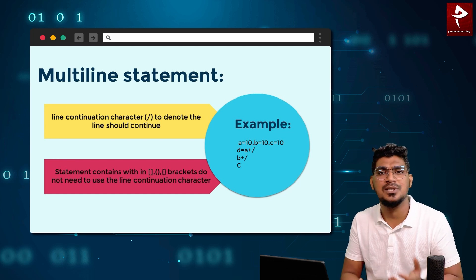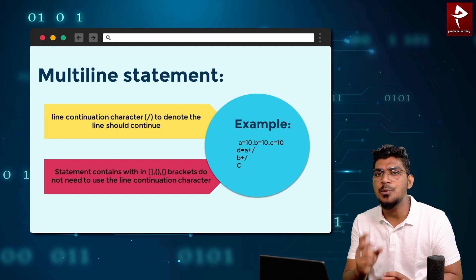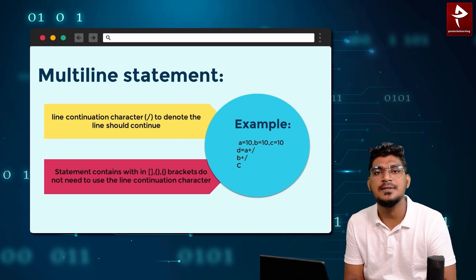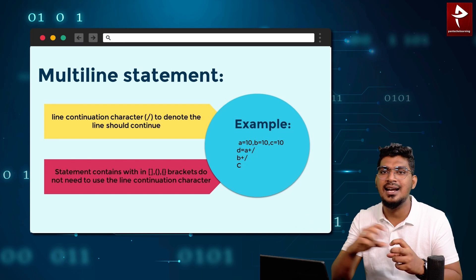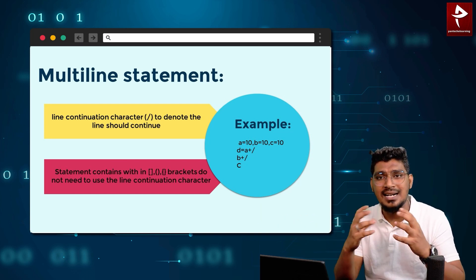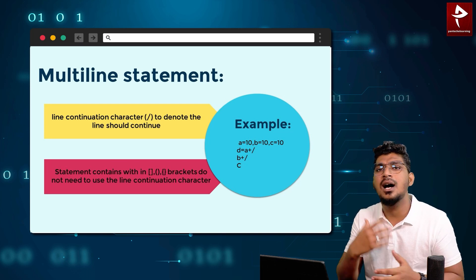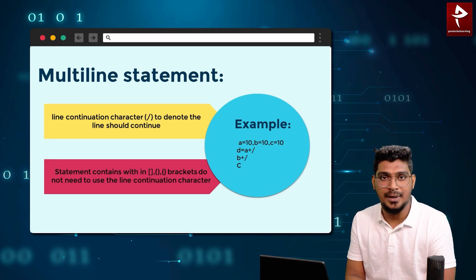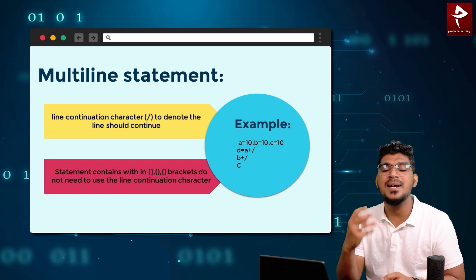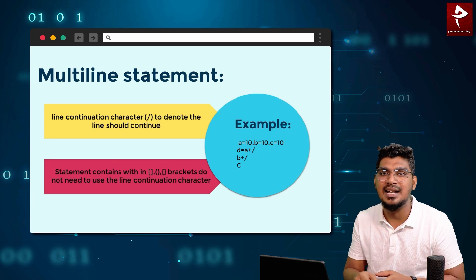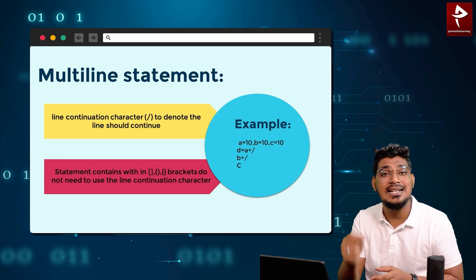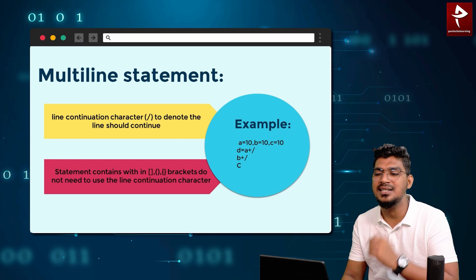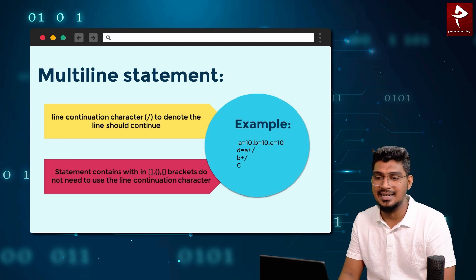Next is multiline statements. What is the purpose of a multiline statement? If you use the backslash character, that is the line continuation character. If you are writing code horizontally in a lengthy way, you can't read it easily. So by splitting the code using the line continuation backslash symbol, it will be considered as a single line but easier to read and understand.